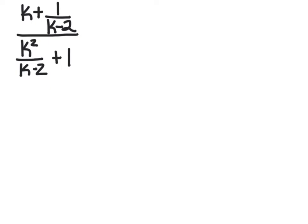Now we're going to do one that has variables in it. We've got k plus 1 over k minus 2, all divided by k squared over k minus 2 plus 1. To solve this, I'm going to simplify the numerator, simplify the denominator, and then multiply the top by the reciprocal of the bottom.